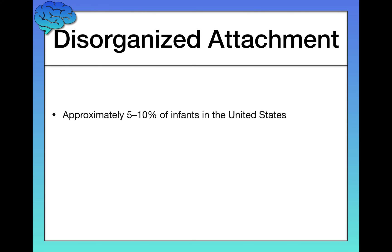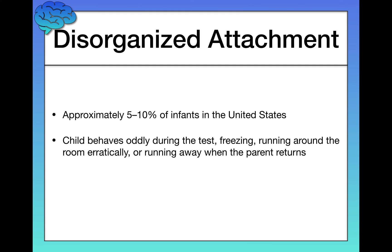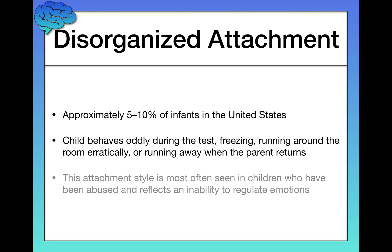Last but not least, we have the disorganized attachment. This is the rarest — about 5 to 10% of infants in the United States. The behavior we see in the strange situation test is disorganized: the child behaves oddly, might freeze, run around erratically, or run away from the parent when the parent returns. Sadly, this reflects an inability to regulate emotions and is often the result of poor parenting, but most often abusive parenting.